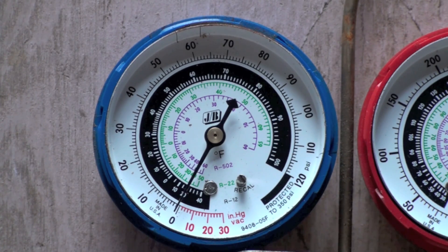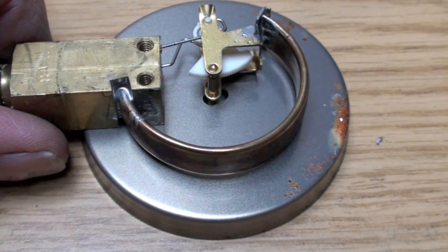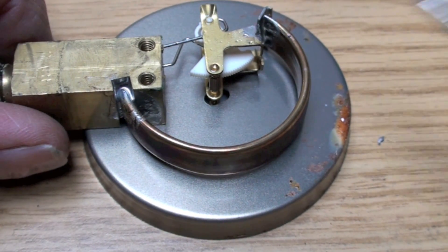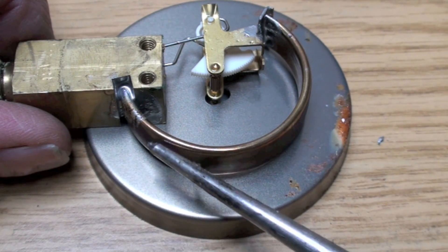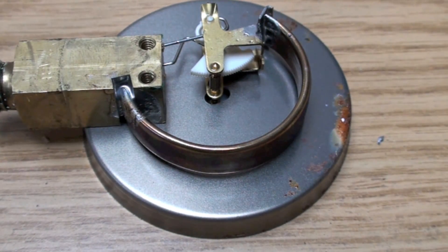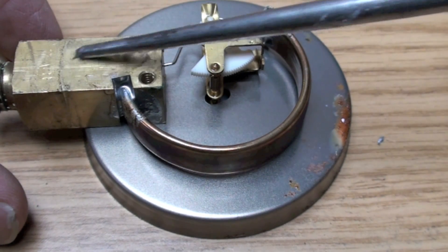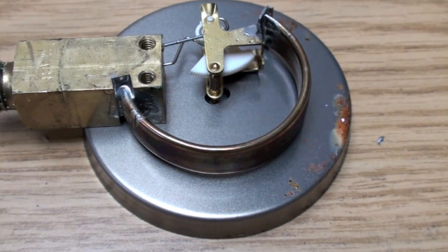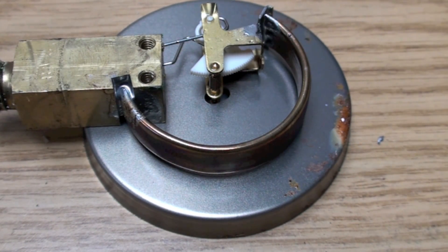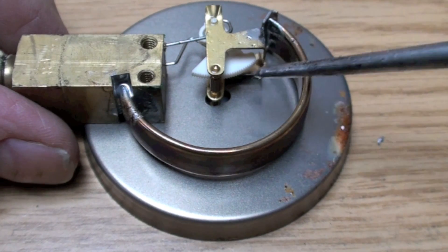Now we're showing the back side of one of these gauges. This part right here is the Bourdon tube. A Bourdon tube is kind of an interesting little device. If I put pressure on it, and the pressure comes from inside this block through this eighth inch pipe thread, if I put pressure on it it'll tend to straighten. Also, so they take advantage of this and they put a little gear right here.